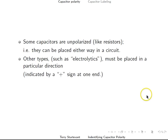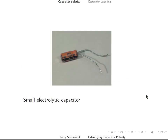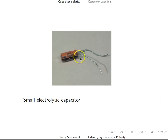That's usually indicated by a plus sign at one end. Big capacitors — pretty much anything bigger than about a microfarad — are usually electrolytic. Here's a small electrolytic capacitor, and you can see a minus sign on it indicating which pin is the negative pin.